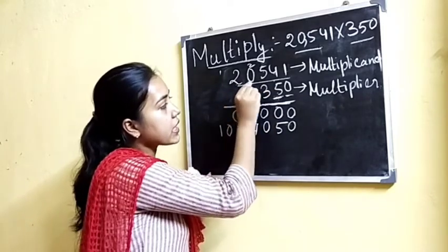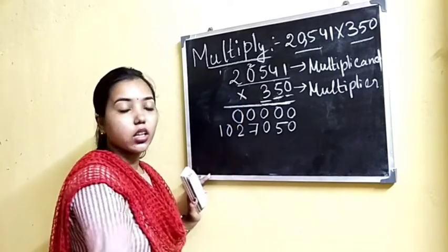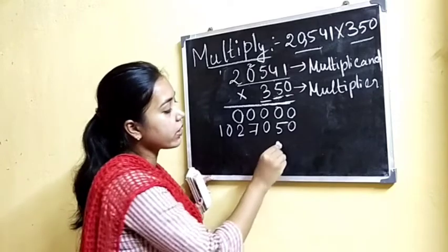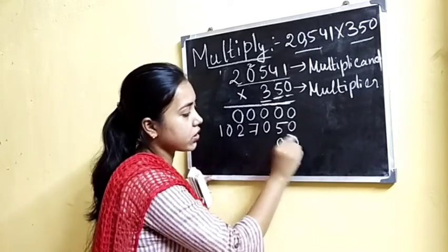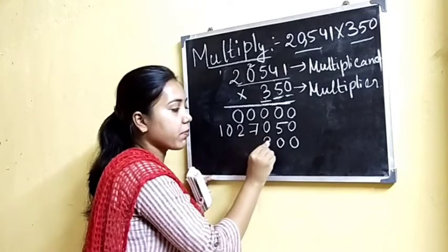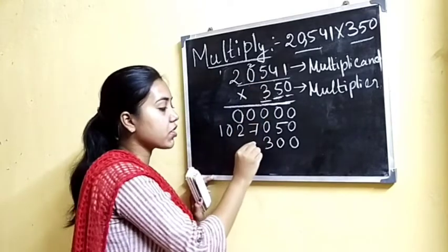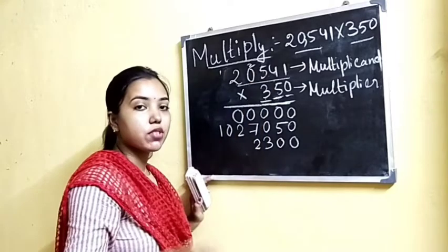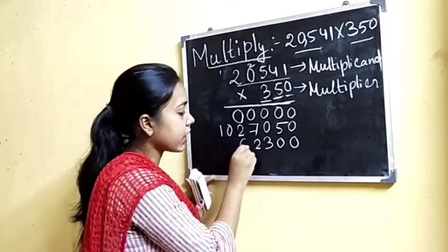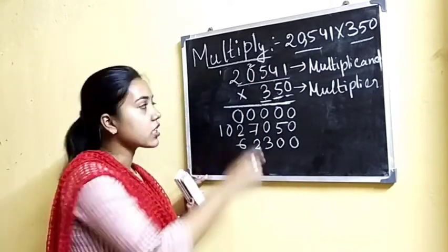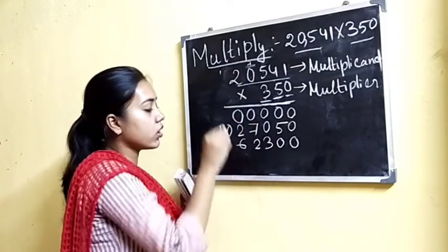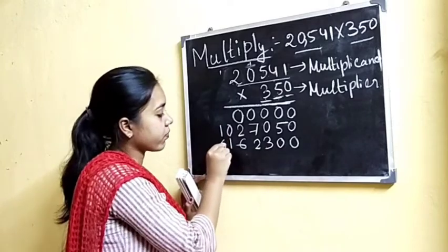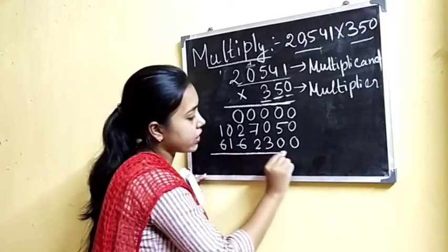Now we will multiply this number by three. Here three is in the hundreds place, so we will put zero in the tens place and ones place. Now three ones are three. Three fours are twelve — write two, carry one. Three fives are fifteen, fifteen plus one is sixteen — write six, carry one. Three zeros are zero, zero plus one is one. Three twos are six. Now we will add these numbers.